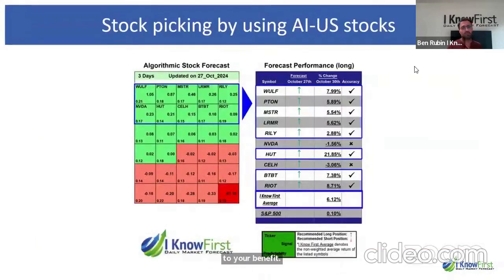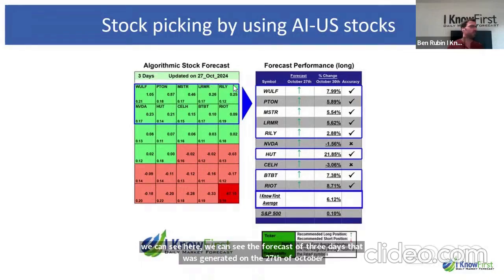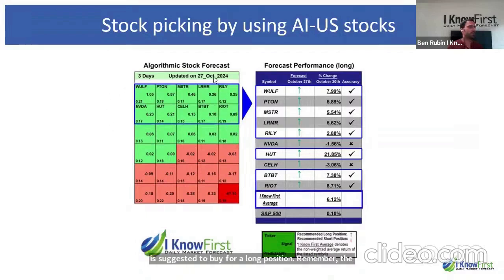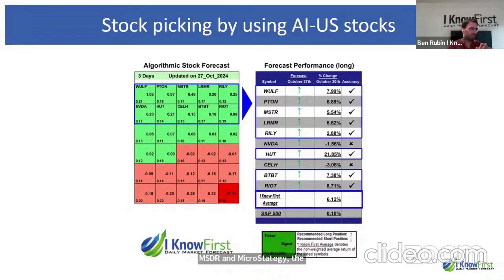Let's look at some examples from the last few days. Here is the three-day forecast generated on October 27th. We can see the top 10 stocks the algorithm suggested for long positions. For example, WOLF made 7.99% in those three days.